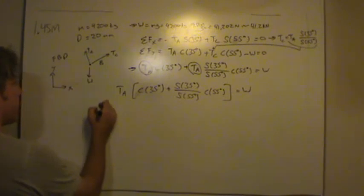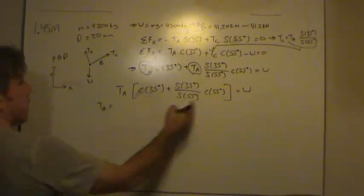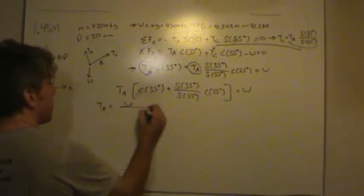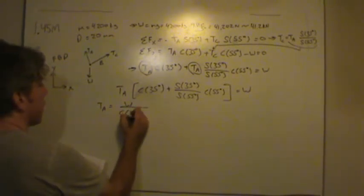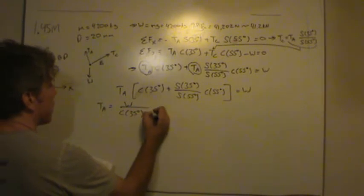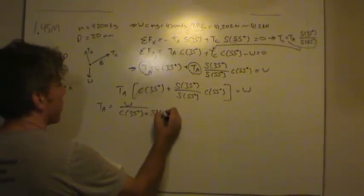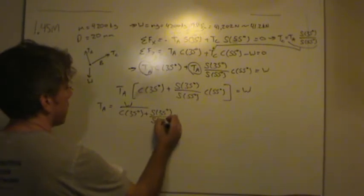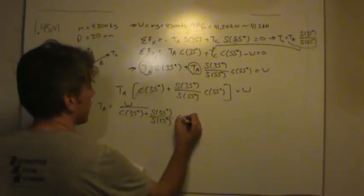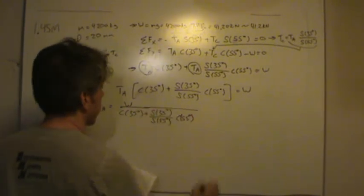Okay, now we know the weight. Finally, solving for TA, TA then is equal to the weight divided by all of this mess in the square brackets as a denominator, cosine 35 degrees plus sine 35 degrees divided by sine 55 degrees, cosine 55 degrees. There we go.